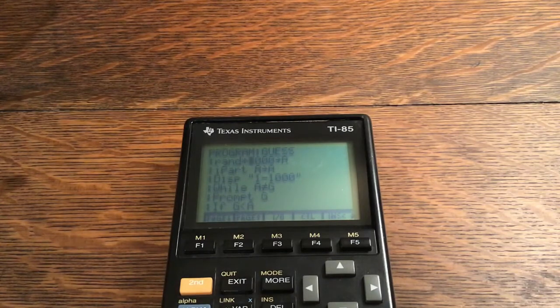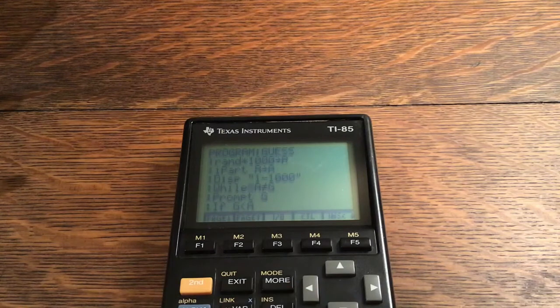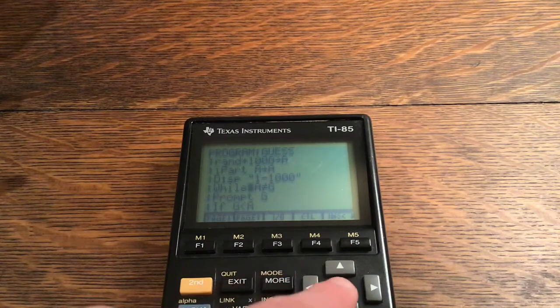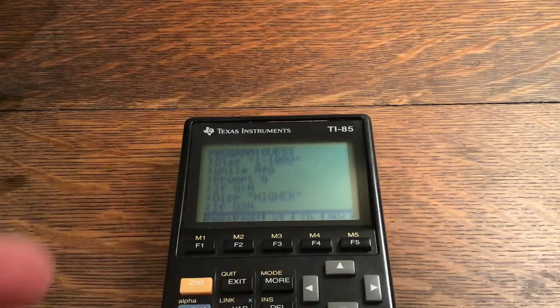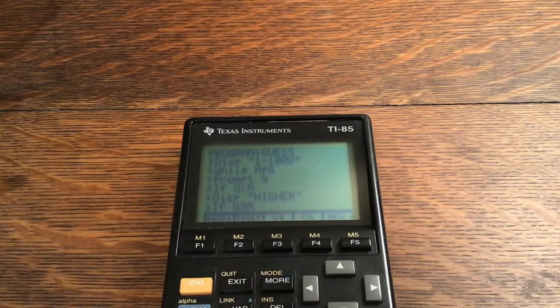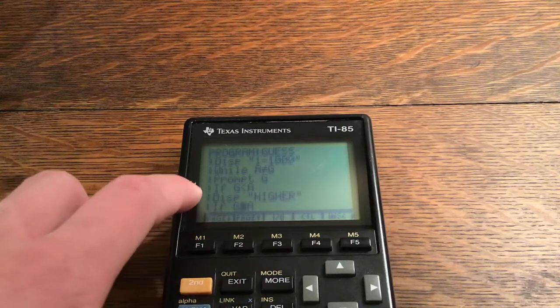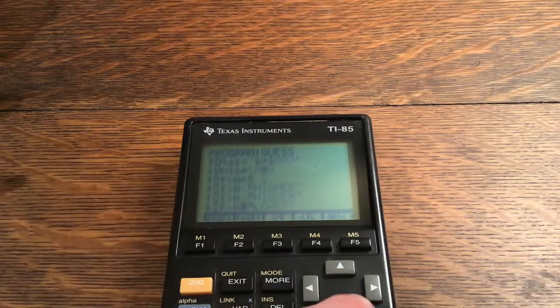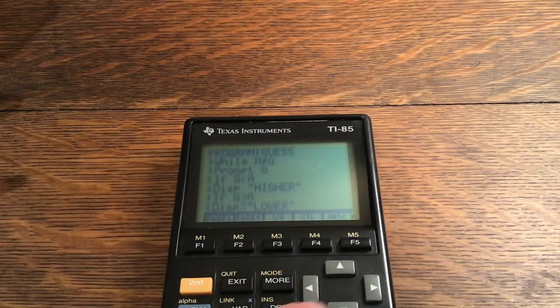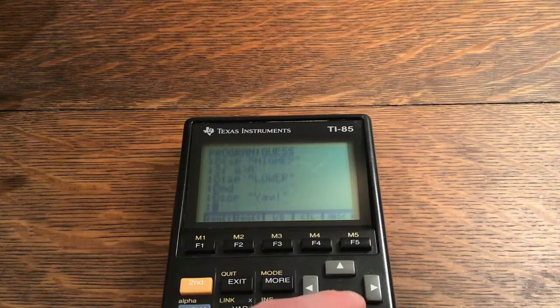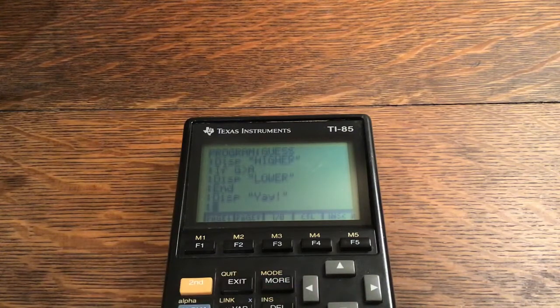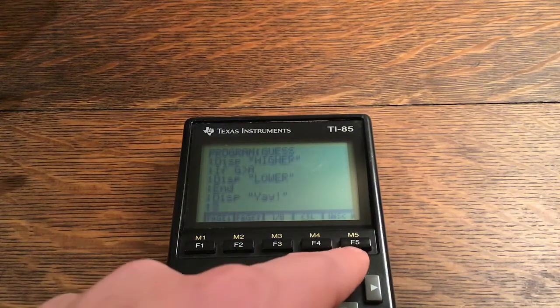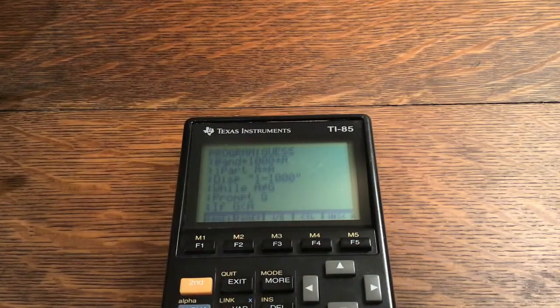And then I have display quote one hyphen a thousand, and then while A is not equal to G, prompt G. And if G is less than A, display quote higher quote. If G is greater than A, display quote lower quote. And display quote yay exclamation point quote. And that is the whole entire program. It's a very short program.